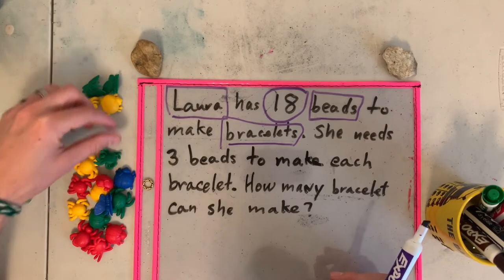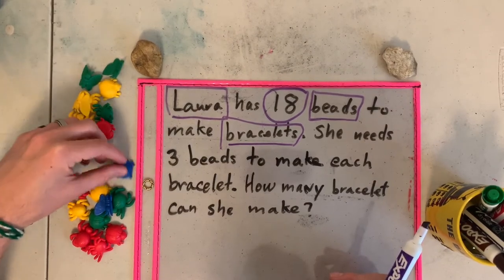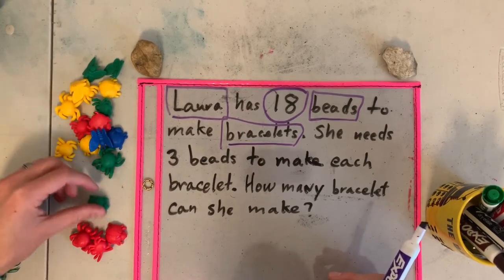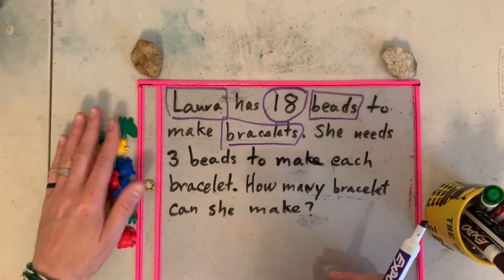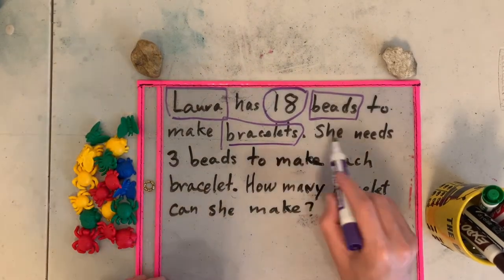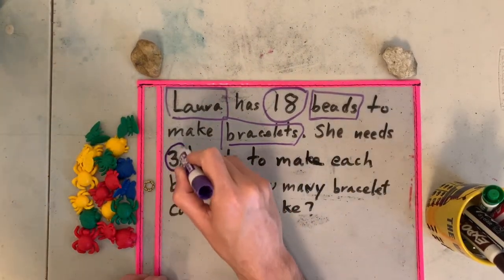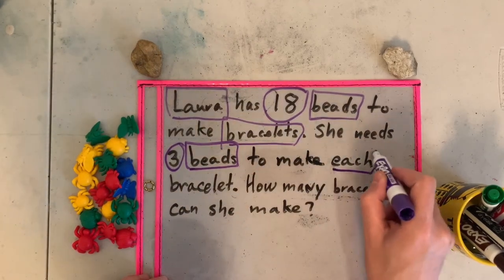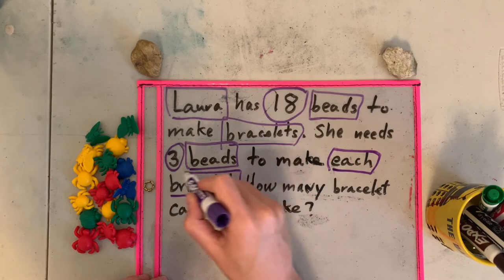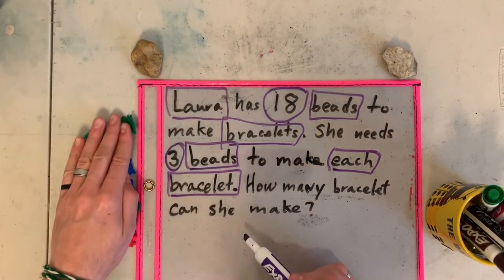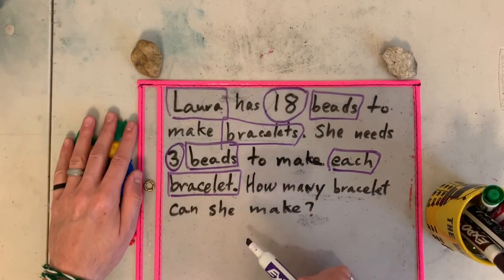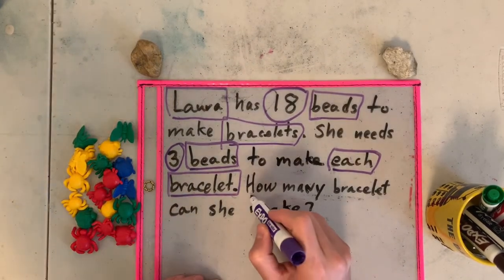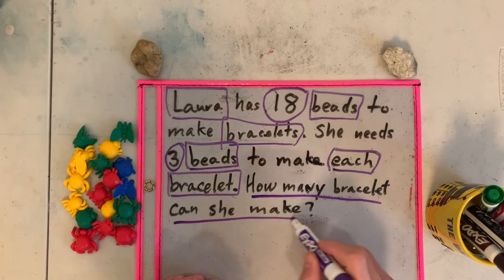And I have here 18 beads. I have one, two, three, four, five, six, seven, eight, nine, ten, eleven, twelve, thirteen, fourteen, fifteen, sixteen, seventeen, eighteen. Eighteen beads. She needs three beads to make each bracelet. So cada pulsera va a tener tres de esto. Aquí hay dieciocho, pero cada pulsera va a tener solamente tres. The question is, how many bracelets can she make?